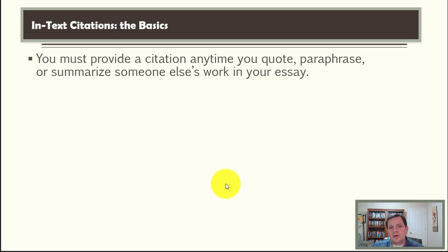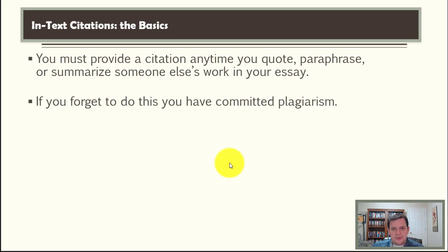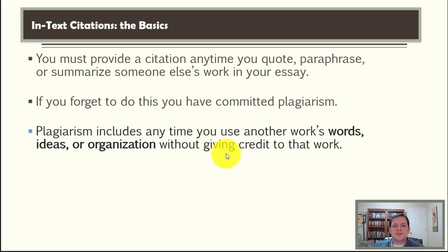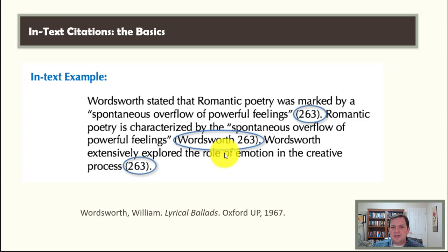This is a matter of integrity and honesty—a matter of not claiming somebody else's intellectual property as your own. If you use somebody else's wording, ideas, or organization, you must cite it. If you forget to cite something you have seen somewhere else, you have committed plagiarism, either intentionally or unintentionally—it is still the same offense. Plagiarism includes any time you use another person's words, ideas, or organization without giving credit. It is, quite simply, intellectual theft—and it will be treated that way.